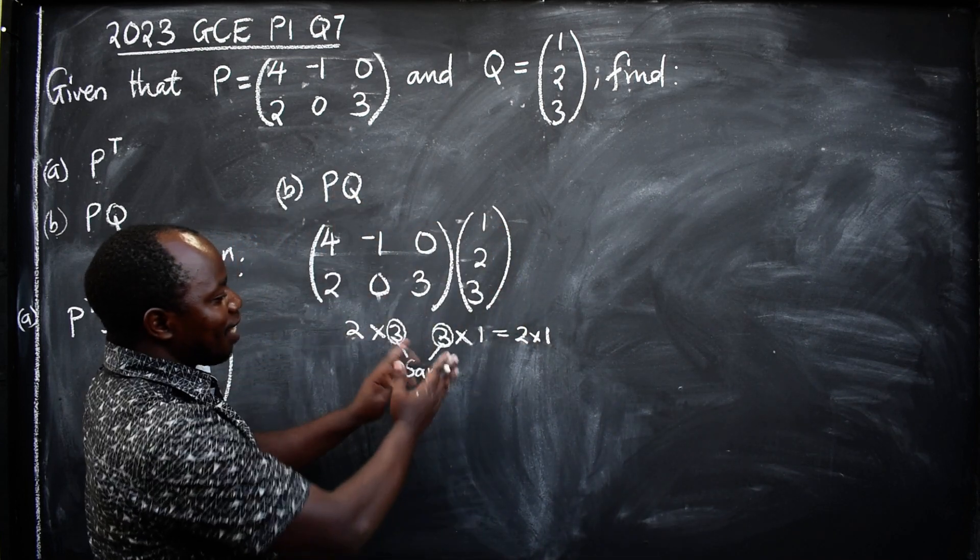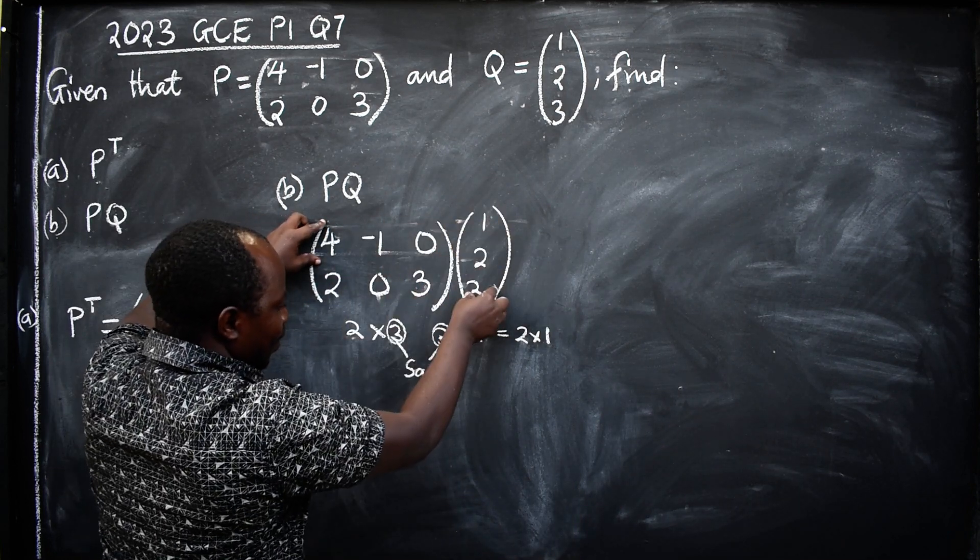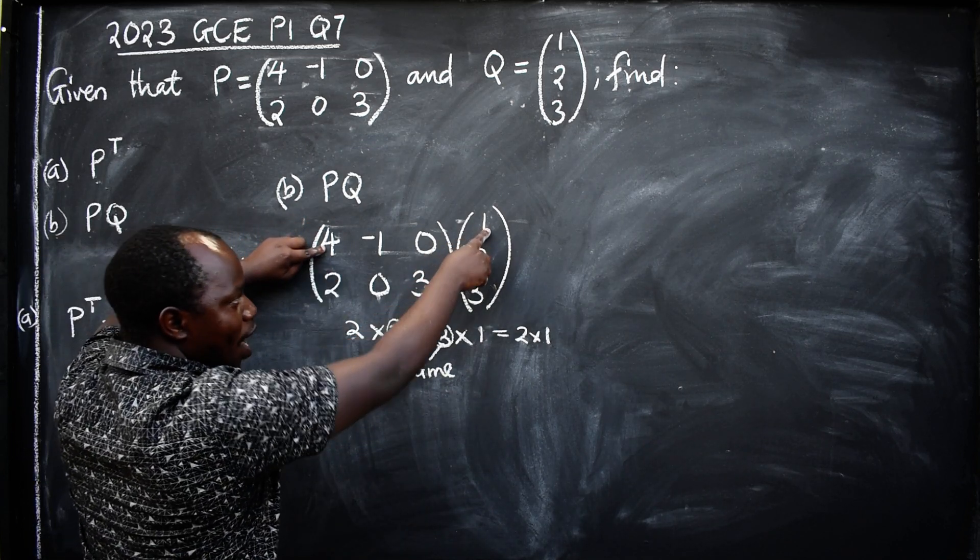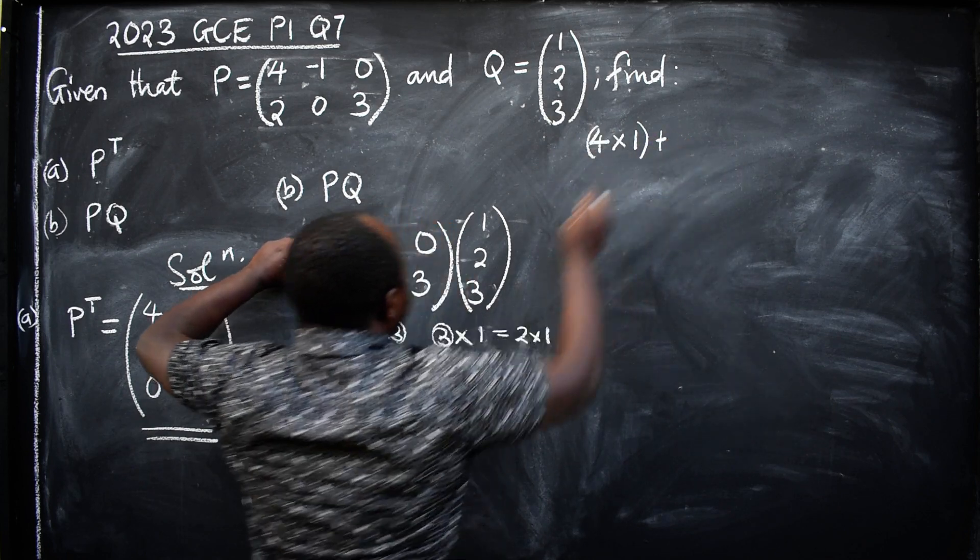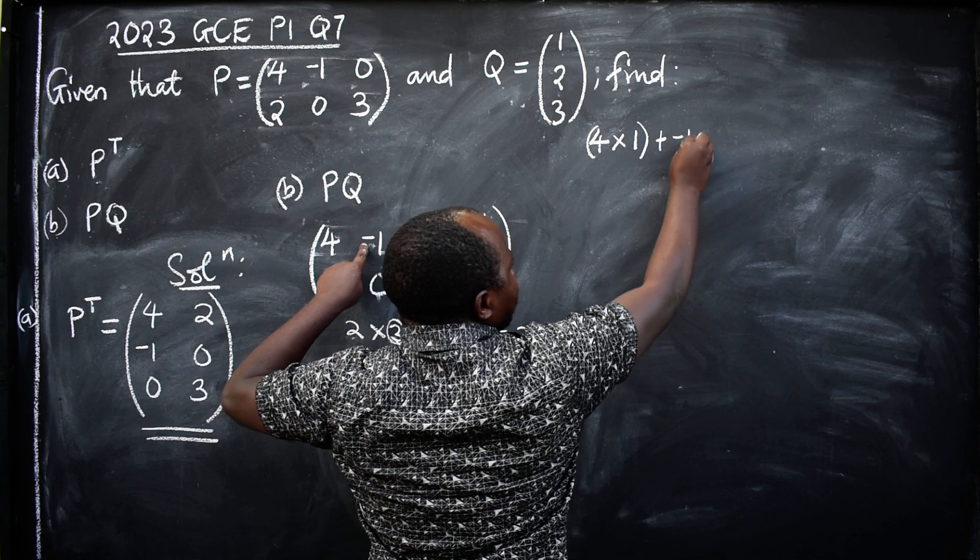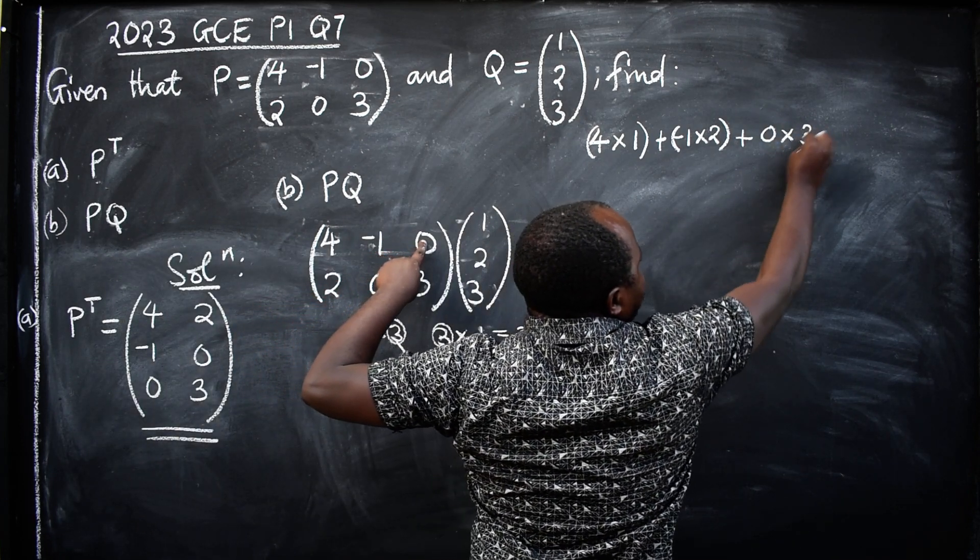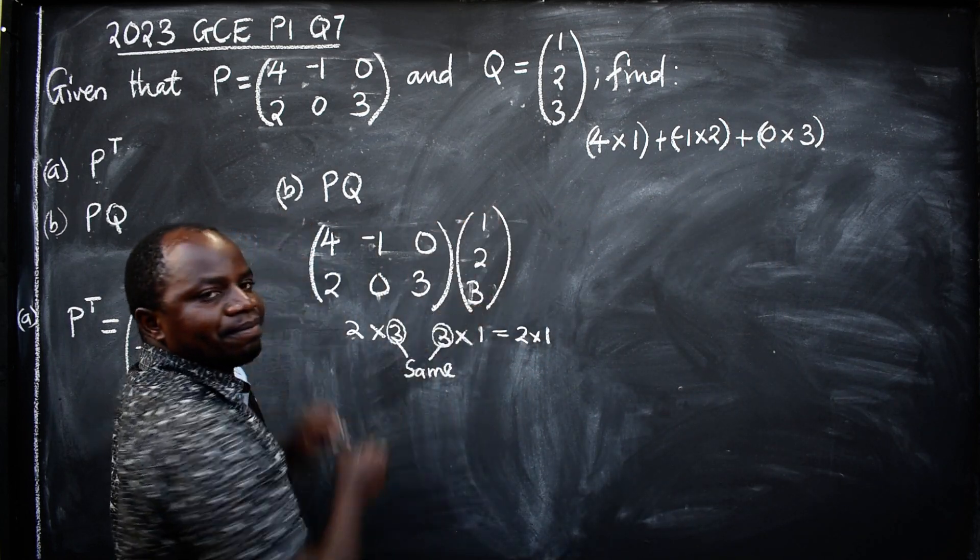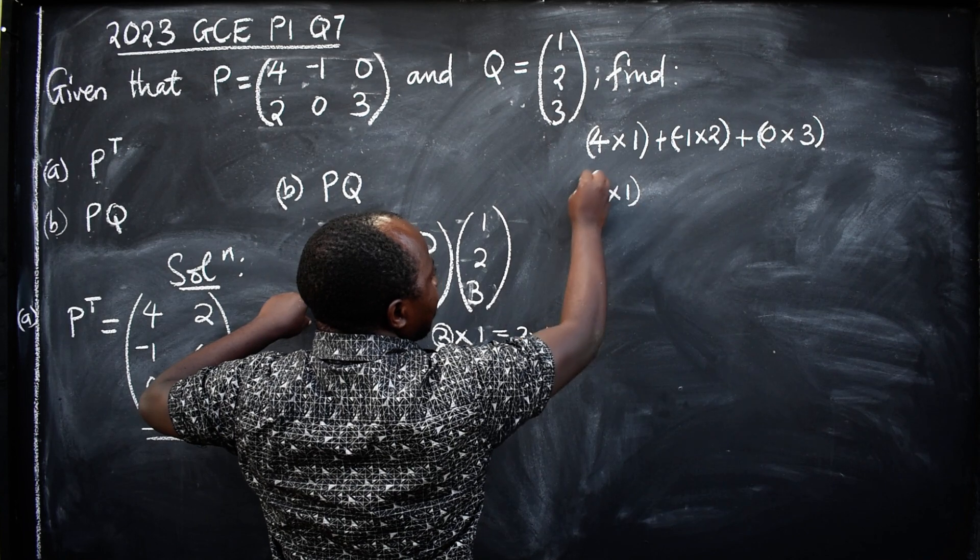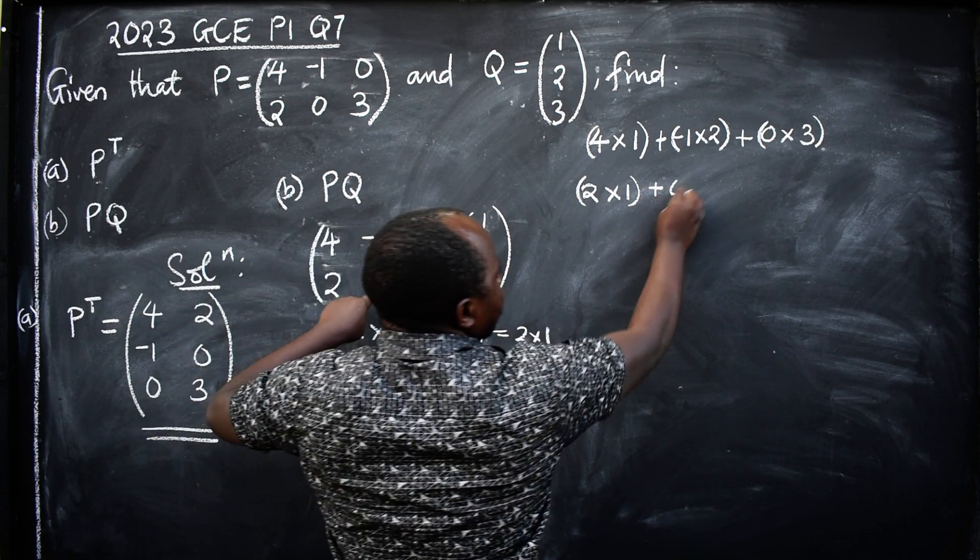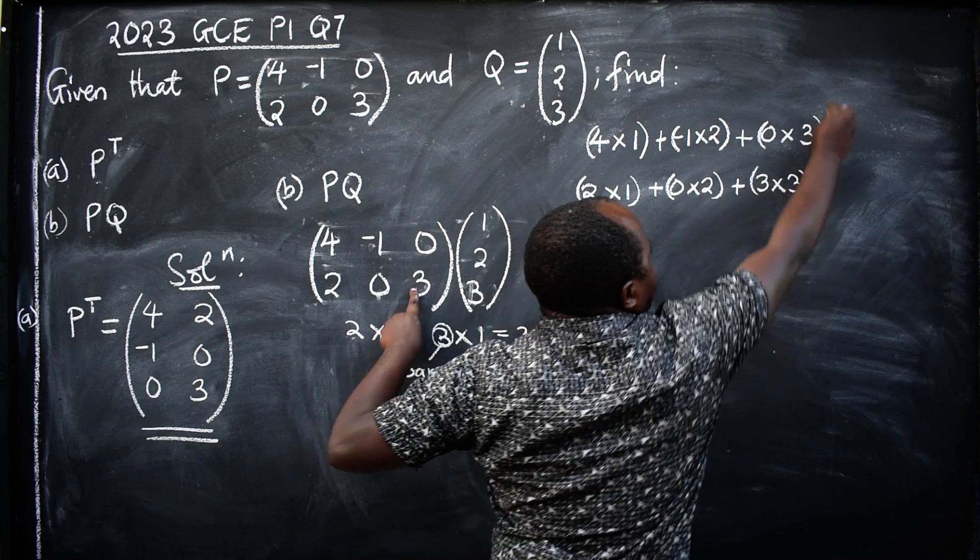That is the meaning. So let's now multiply. Whenever you are multiplying, it's row by column, right? So row multiply by column. We are going to say 4 times 1, plus -1 times 2, plus 0 times 3. We are done with the first one like this. We come to this: 2 times 1, plus 0 times 2, plus 3 times 3.